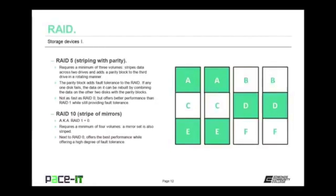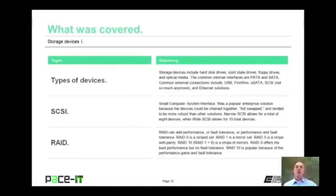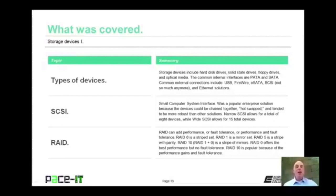If you have the ability, you might want to implement RAID 10 — also called a stripe of mirrors or RAID 1+0. It requires a minimum of four volumes and involves a mirror set that is also striped. Next to RAID 0, it offers the best performance, but it also offers a high degree of fault tolerance. That concludes this session on storage devices — types of storage devices, SCSI, and RAID.